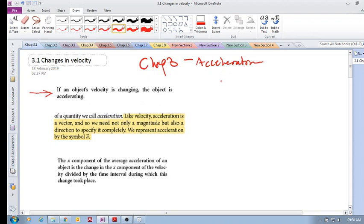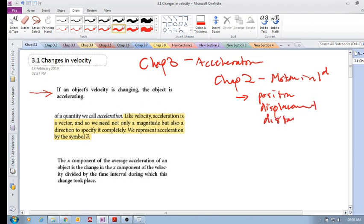So we know from chapter 2, which was motion in one dimension, we looked at position, displacement, distance, speed, velocity - we looked at all of these. This is chapter 2.